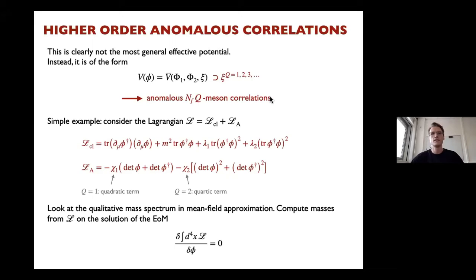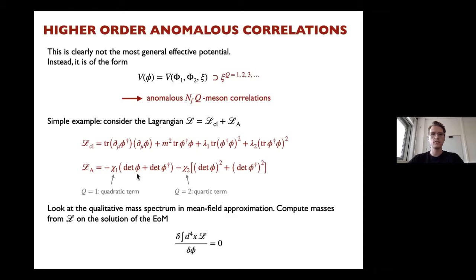In general, one has anomalous N_f times q meson correlations, where q is the power. To illustrate, consider a simple linear sigma model with a classical part: kinetic term, mass term, and two quartic interactions. I've neglected higher order terms. This is the classical part of the action.